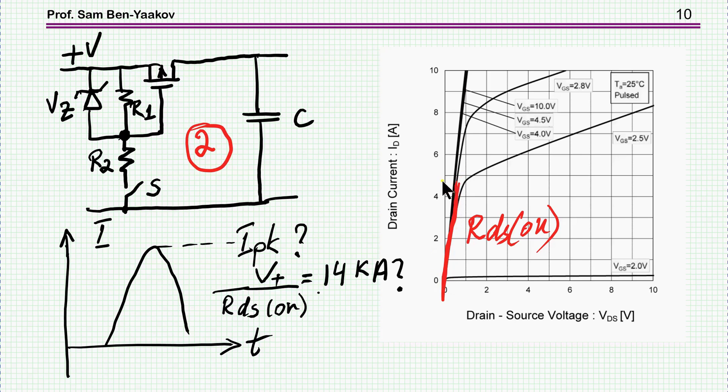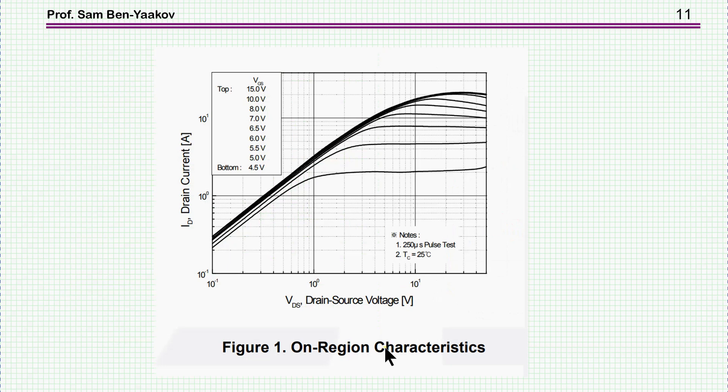The point is that RDS on is the slope here at very low voltages and low current relatively. So in this region here of the I as a function of VDS and this is the gate voltage, here is the RDS on. However, if you move to higher current, you get to the region in which the MOSFET behaves like a current source.